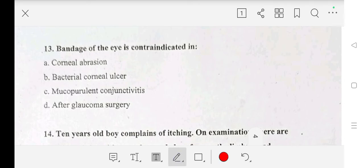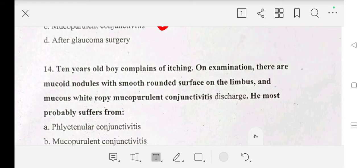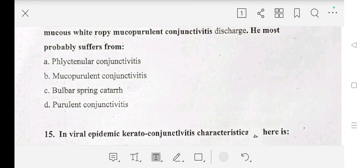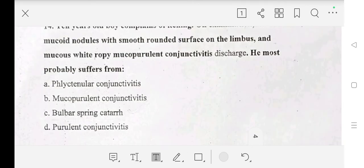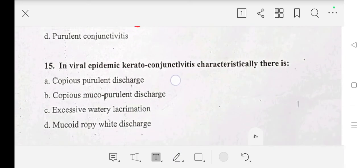Fourteenth question: 10-year-old boy complains of itching. On examination, there are mucoid nodules with smooth rounded surface on the limbus and mucus with ropy mucopurulent discharge. He most probably suffers from phlyctenular conjunctivitis, mucopurulent conjunctivitis, bulbar spring catarrh, or purulent conjunctivitis?